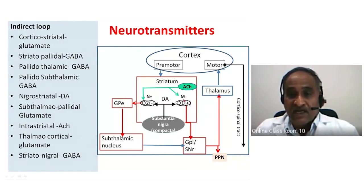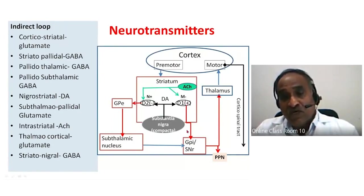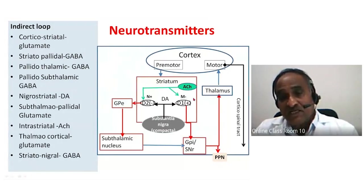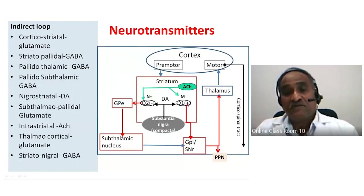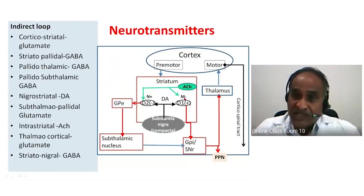The neurons in the direct circuit are expressed with muscarinic receptors, which are inhibitory in nature. So dopamine D1 excites or increases the output of the direct circuit, while muscarine suppresses the output — there is a balance between these two.